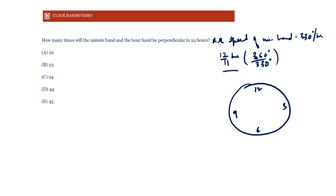On the clock diagram starting at 12 o'clock, in 12/11 hours the hour hand moves to just slightly to the right of 1. The minute hand completes a full circle from 12, goes all the way around, and overlaps with the hour hand just slightly to the right of 1. So the first overlap occurs at 12/11 hours past 12 o'clock.